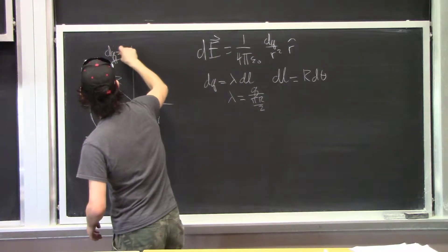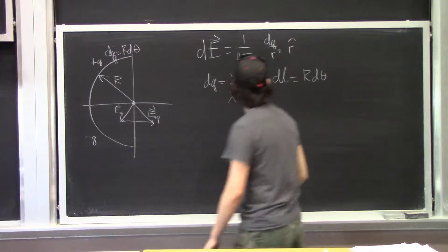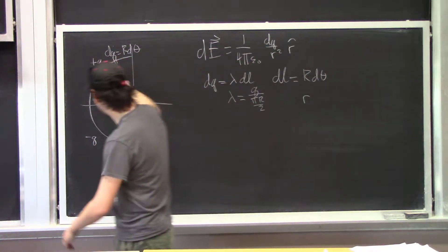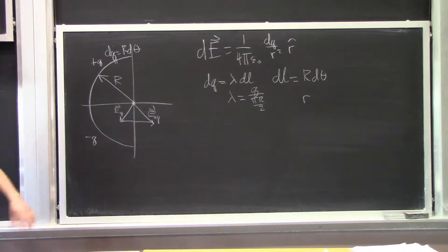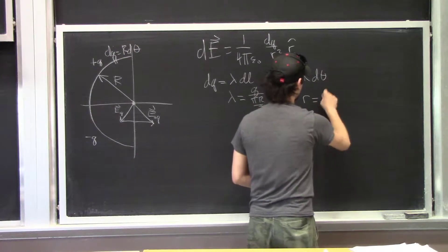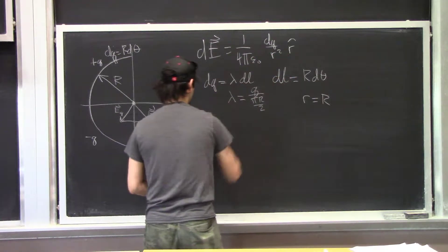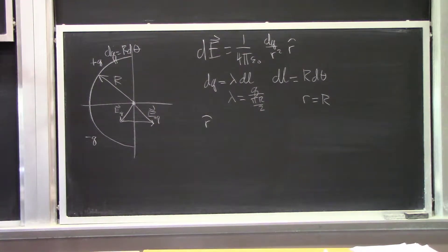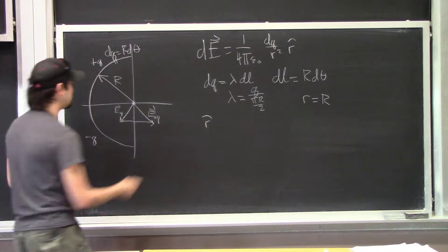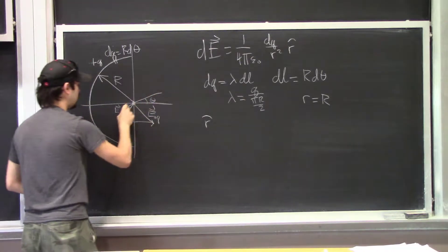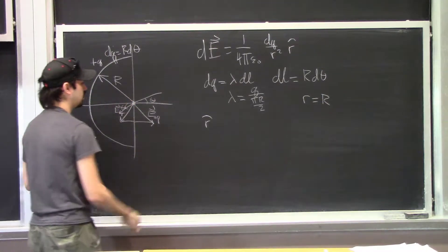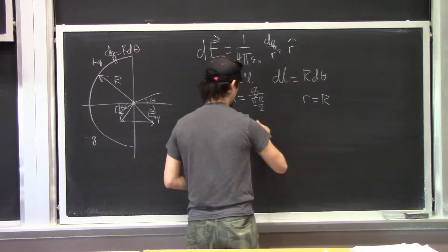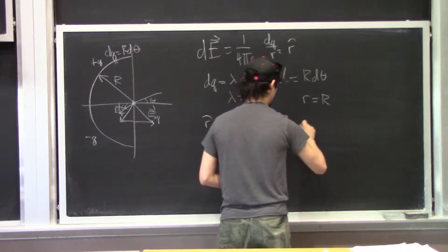dL is going to be R dθ, so dQ equals R dθ. R in these cases of charges spread over arcs of circles is always just going to be the radius of the circle, capital R. The last thing we need to figure out is R-hat, which is the tricky part. If I measure the angle relative to the positive X axis, R-hat is going to be equal to minus cosine(θ) x-hat minus sine(θ) y-hat.